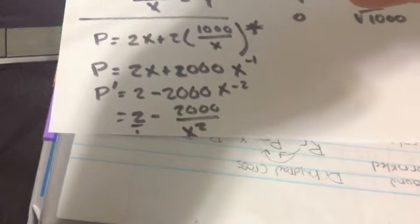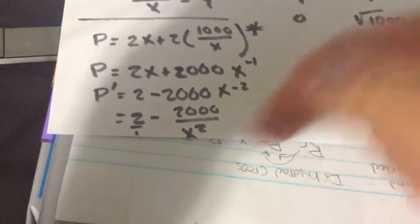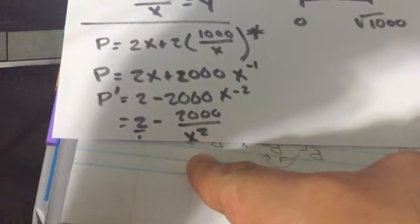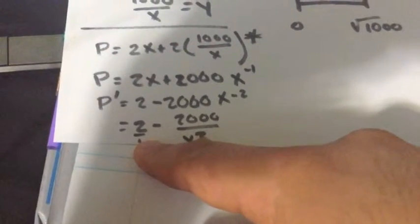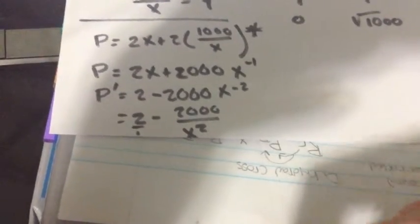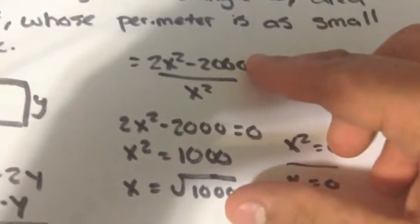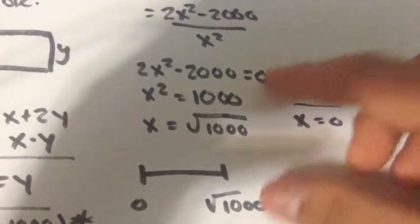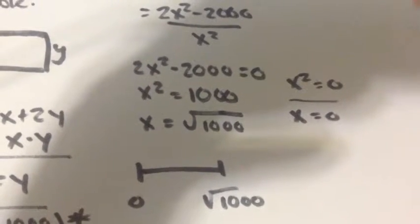So now you're trying to find the critical numbers of this equation. So it's 2 minus 2000 over 2x squared. Finding critical numbers, I like to put this number in fraction. So it would be easier to multiply. So you would get 2x squared minus 2000 over 2x squared.